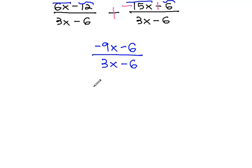In the numerator, there's a GCF of negative 3, leaving behind 3x plus 2. In the denominator, there's a GCF of 3, leaving behind x minus 2.